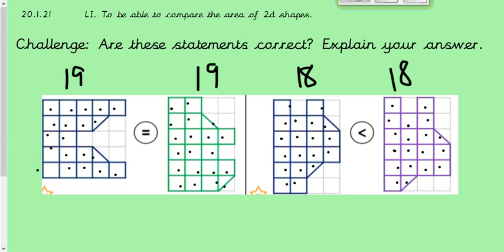OK, welcome back if you have completed your challenge. So I've just counted the area for each shape and the blue one at the start here was 19 and the green one was as well. So therefore this symbol is correct because they are equal, they are the same.